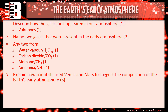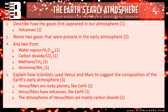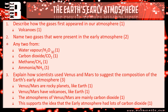Question three: explain how scientists use Venus and Mars to suggest the composition of the Earth's early atmosphere. The first thing is Venus and Mars are rocky planets like Earth. What do they have similar to Earth? Volcanoes. Their atmospheres are mostly made up of carbon dioxide, so that helps to give us evidence. And then your fourth marking point is that this supports the idea that the early atmosphere had lots of carbon dioxide. You could have brought water vapour in as well, but the main thing is the carbon dioxide.